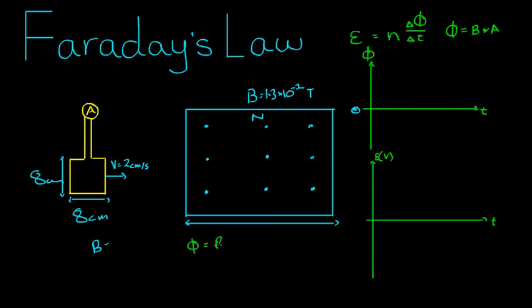Flux is equal to Ba. The maximum will occur when the loop is inside this region. So that's equal to 1.3 times 10 negative 2 times the area, which is 8 centimeters times 8 centimeters, so that's 8 times 10 negative 2 squared, which equals 8.32 times 10 to the negative 5. That is the maximum flux which this loop will experience.